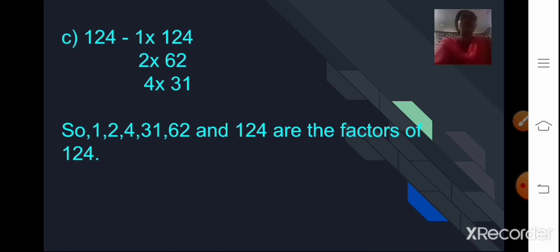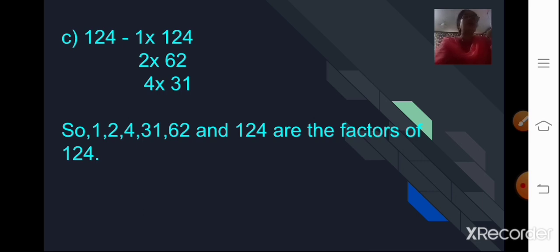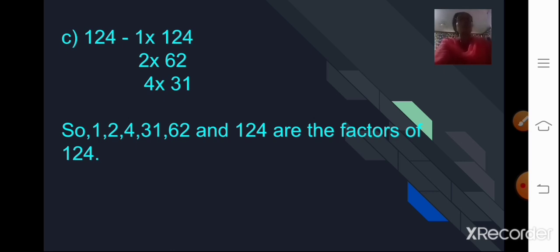Coming to the next number, 124. Starting with 1: 1×124=124. Since 4 is in the ones place it is divisible by 2, giving quotient 62, which is also a factor. Now 4+2+1=7, which does not come in the table of 3, so 124 is not divisible by 3. When you divide 124 by 4 you get the quotient 31. So the factors of 124 are 1, 2, 4, 31, 62, and 124.